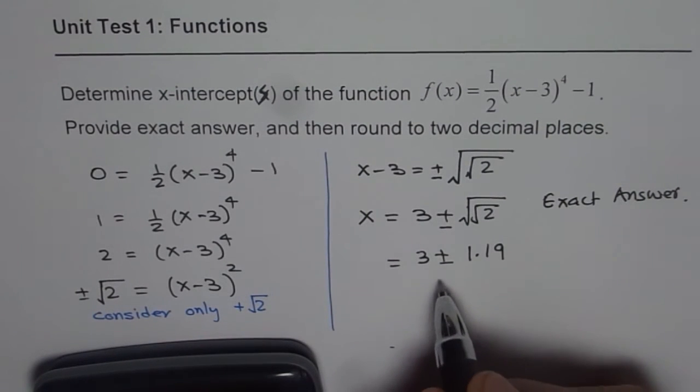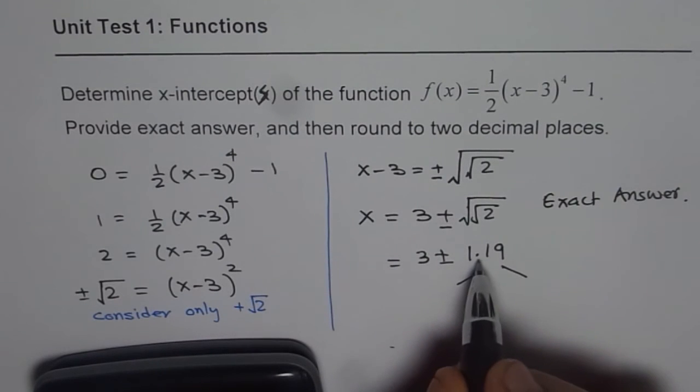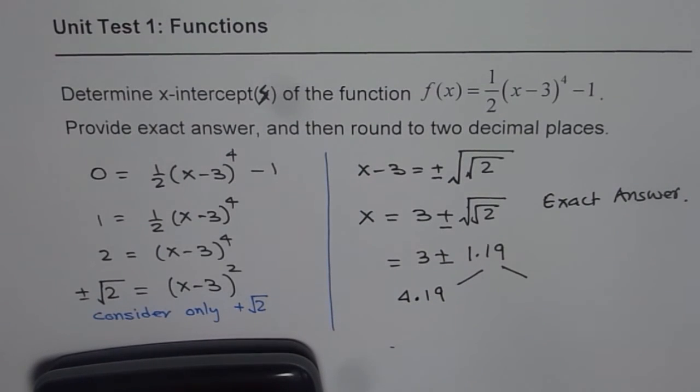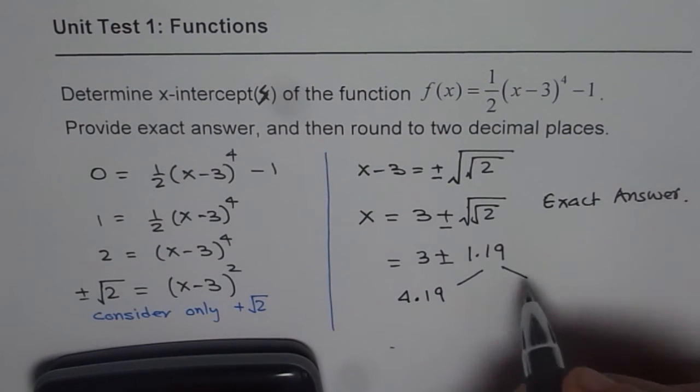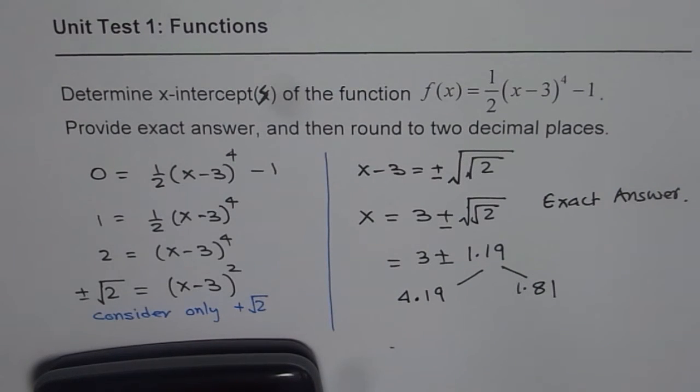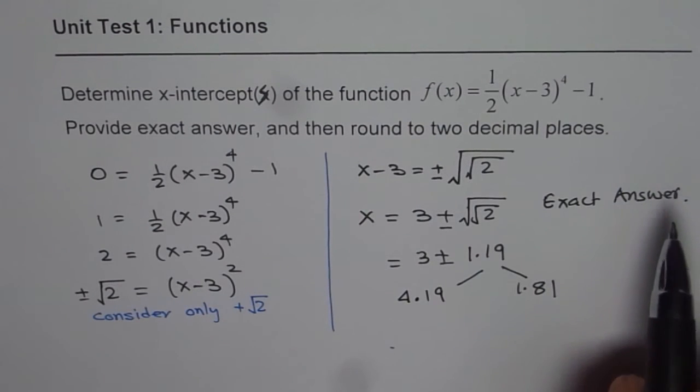So one could be 3 plus, which will give us 4.19. The other one will be 3 minus 1.19, that gives us 1.81. So these are the two answers rounded to two decimal places.